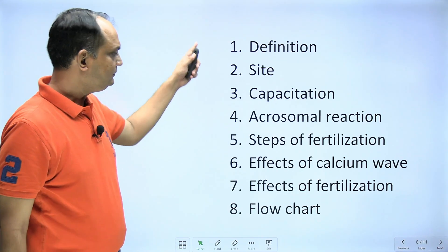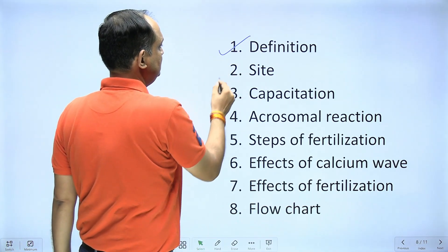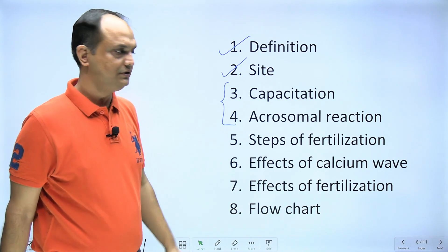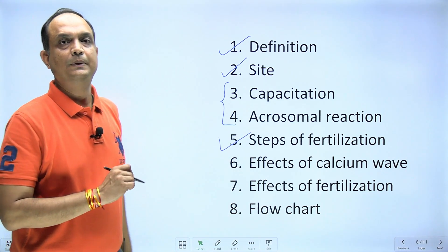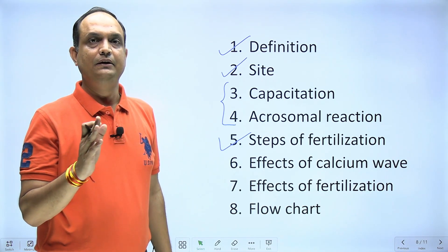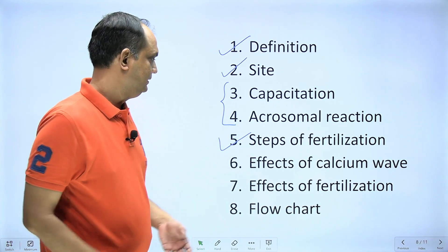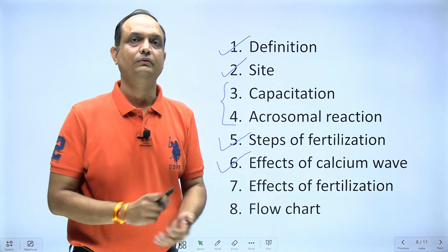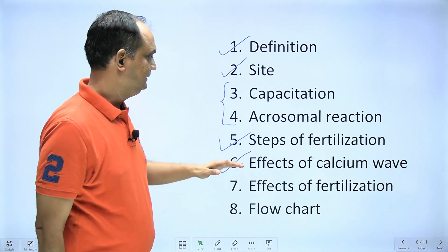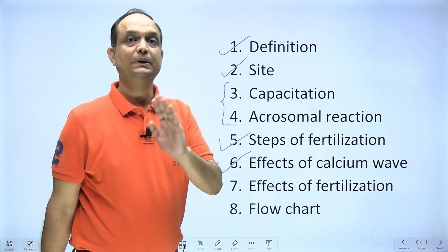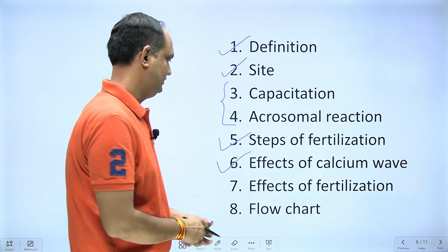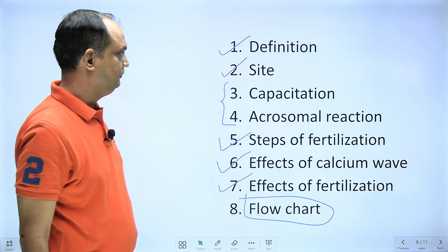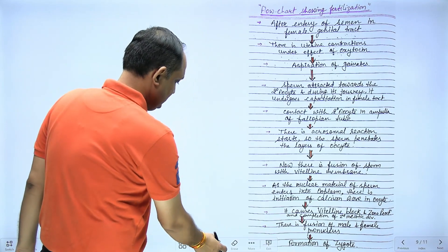When writing in the exam, first write the definition, then the site of fertilization, then the two steps of priming — capacitation and acrosomal reaction — then the four steps of fertilization: penetration of corona radiata, zona pellucida, vitelline membrane, and fusion of pronuclei. Then describe the effects of the calcium wave — three effects — and the effects of fertilization. Finally, draw a flowchart.